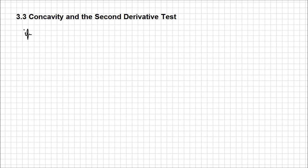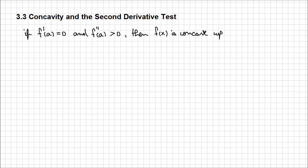If the first derivative f' equals zero and the second derivative at point a is positive, then f is concave up and the point a is a local minimum. Graphically, this point would look something like this.